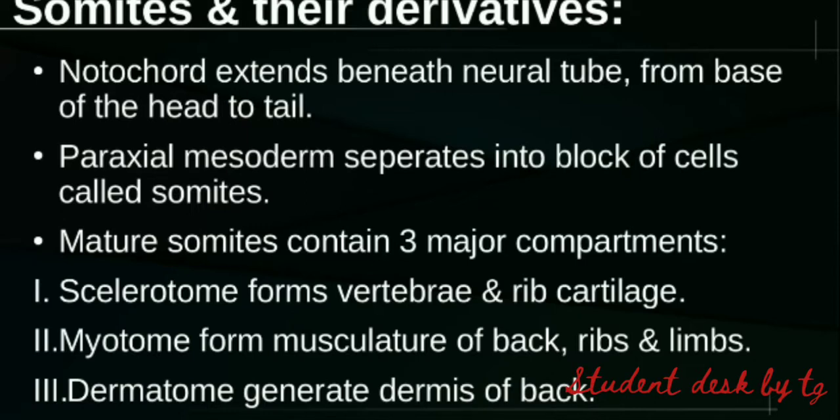The paraxial mesoderm is divided into blocks of cells called somites. Mature somites contain three major compartments: the sclerotome, the myotome, and the dermatome. The sclerotome gives rise to vertebrae and rib cartilage.